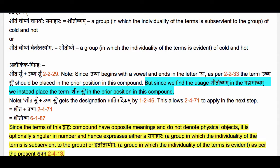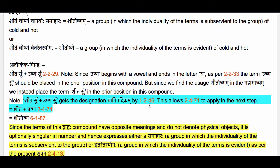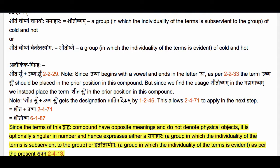Sheetasu plus Ushna Su gets the designation Prajabhidikam by 1.2.46 Kritta Dittasama Asascha. This allows us to apply 2.4.71 Supodha to Prajabhidika Yoho to perform the luk elision on the sup-affixes Su and Su inside the compound Prajabhidikam. So now we have Sheetha plus Ushna, then we apply Adhgunaha to get Sheetoshna.